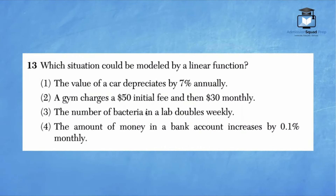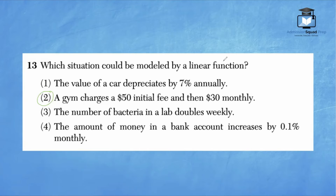Number 13: which situation could be modeled by a linear function? For linear functions, we add or subtract the same amount every time. A card depreciating by 7% annually means multiplying — that's exponential. A gym charging $50 initial fee then $30 monthly means adding $30 each month — that's linear. Bacteria doubling weekly means multiplying by 2 — exponential. A bank account increasing by 0.1% monthly means multiplying — also exponential. Choice 2 is the correct answer.